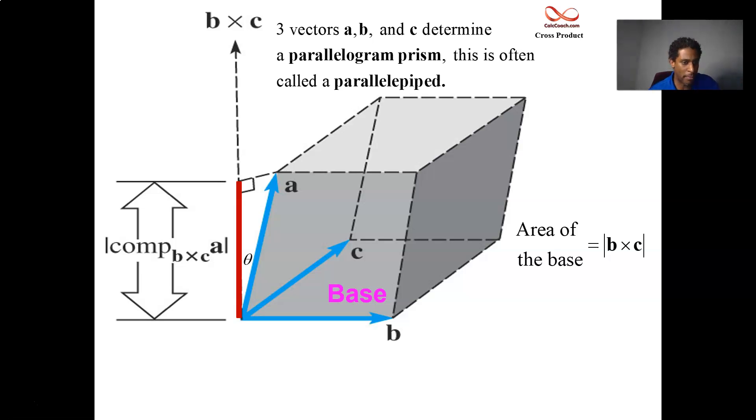And the magnitude of that projection vector is called the component. In case it's negative, we put absolute value bars around it. The component of a along b cross c, that is going to be the height of your shape.